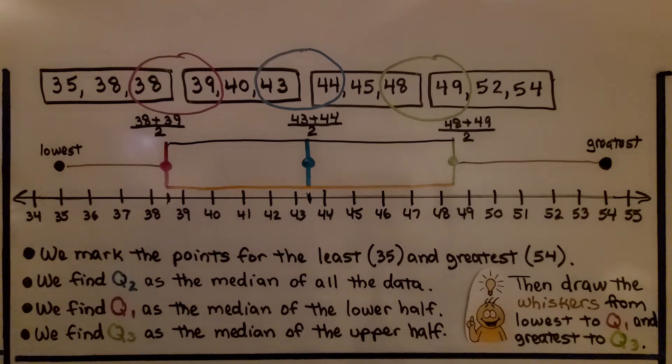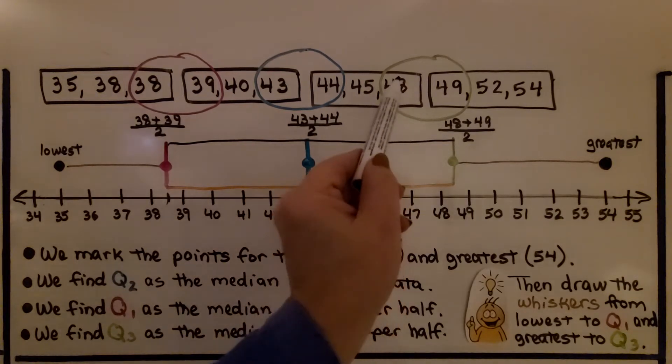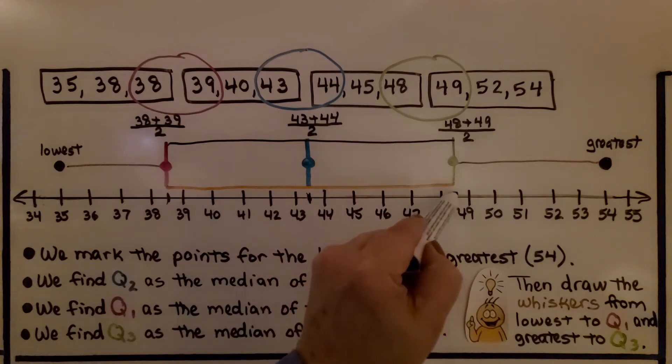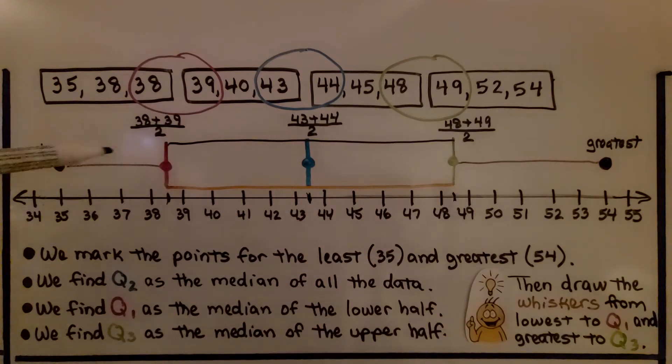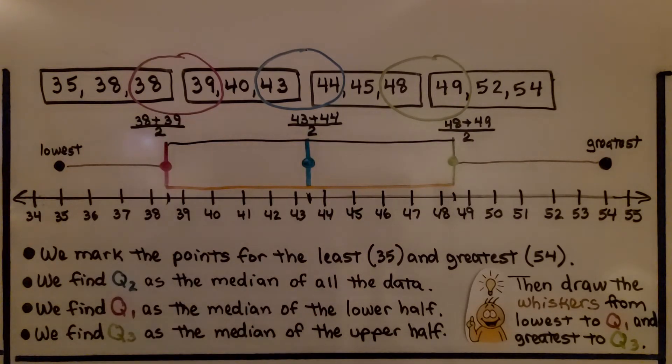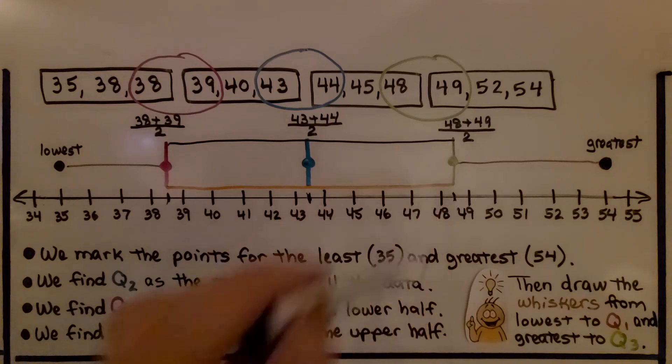And we find Q3 as the median of the upper half. We have 48 and 49 for the two middle numbers. So it's going to be 48 and a half. It's going to be about right here. Then we just draw our lines and points, our line and point, our line and point.